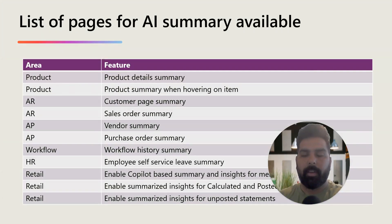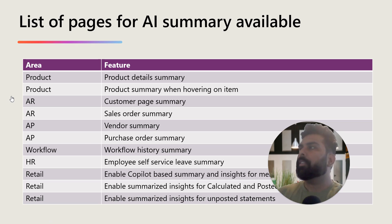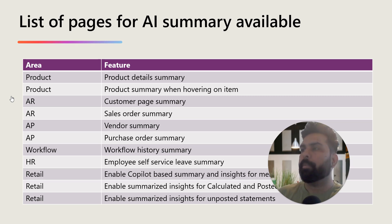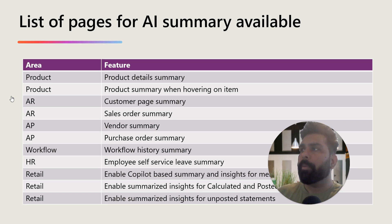Now let's understand the different features available as part of this summary. These features are across different modules in D365 Finance and Operations. Under Product, you have the product details summary page, and product summaries when hovering over an item on a sales order line or purchase order line. Then you have customer and sales order under AR, vendor and purchase order under AP, workflow, HR employee self-service, and retail and commerce covering posted and calculated or unposted statements.